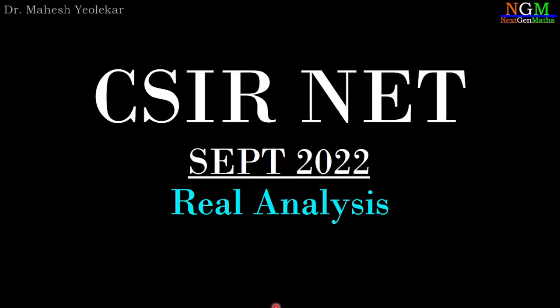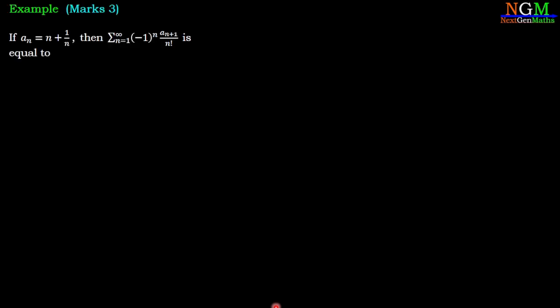In this video, we are going to discuss the problem of CSIR NET, September 28, 2022, problem of real analysis. The question is: if A_n = (n+1)/n, then find Σ (n=1 to ∞) of (-1)^n · A_{n+1} divided by n factorial.